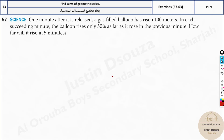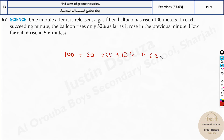Let's look into the problems — they're all real-world problems. Problem one: a gas balloon has risen 100 meters in the first minute. Each succeeding minute the balloon rises only 50% as far as it rose in the previous minute. So: first minute 100, next 50, then 25, and so on. How far will it rise in five minutes?